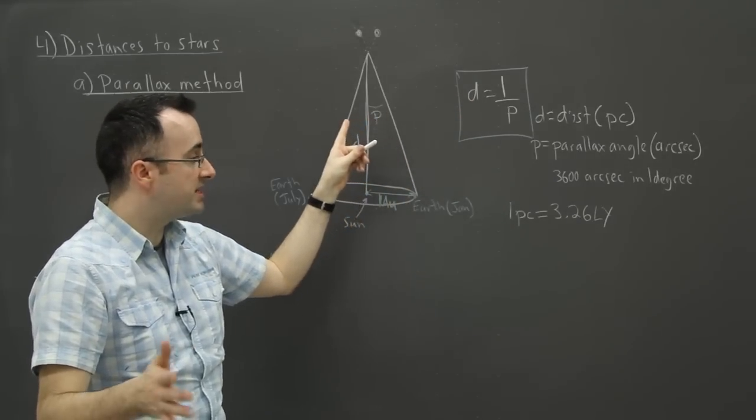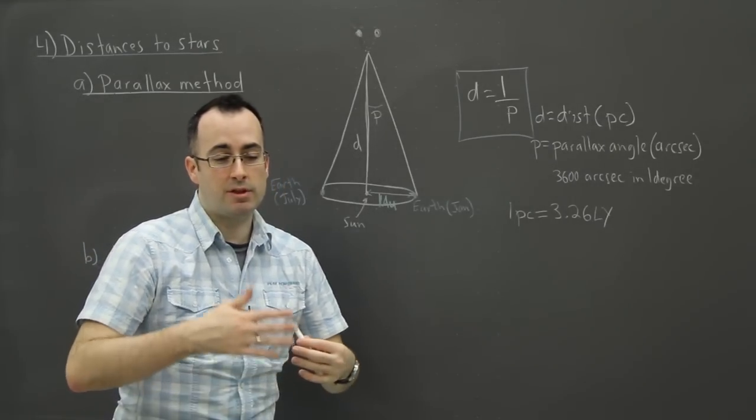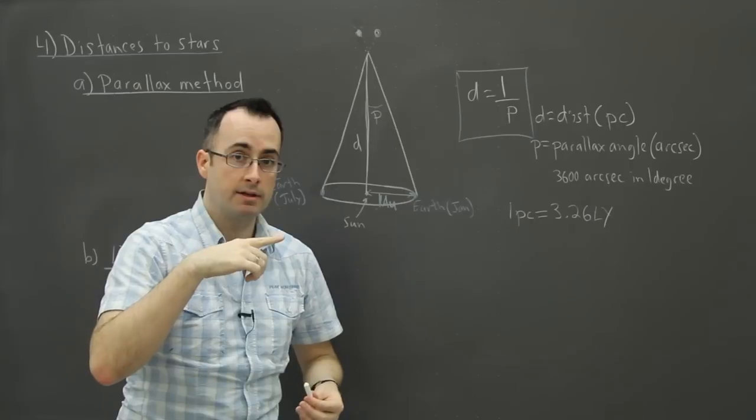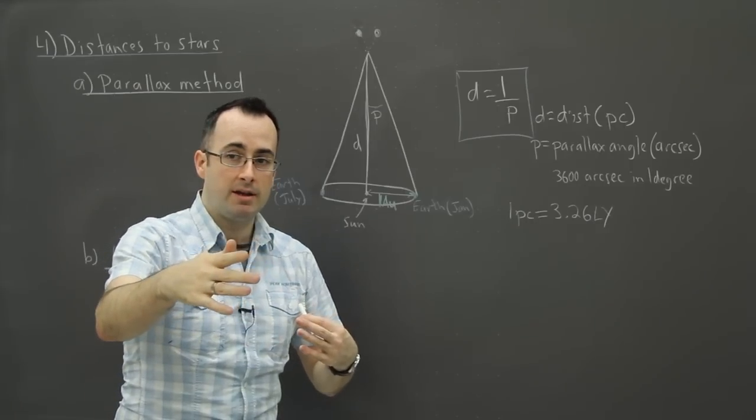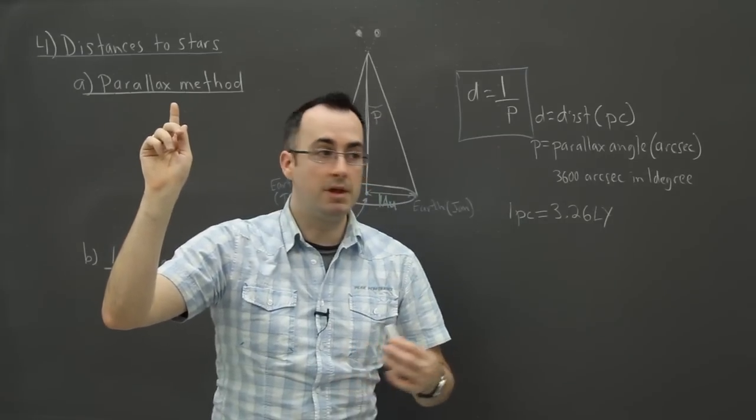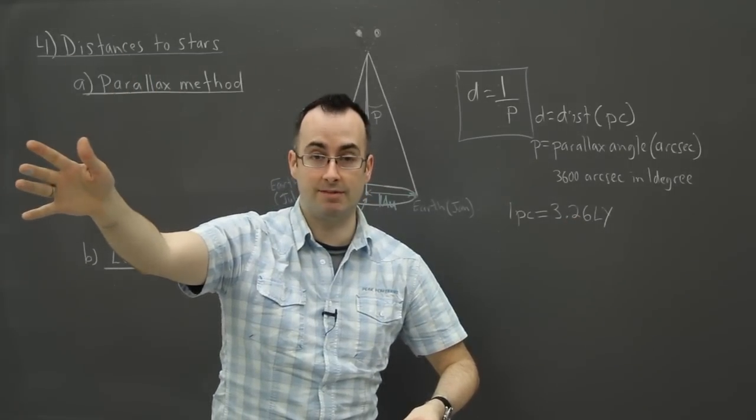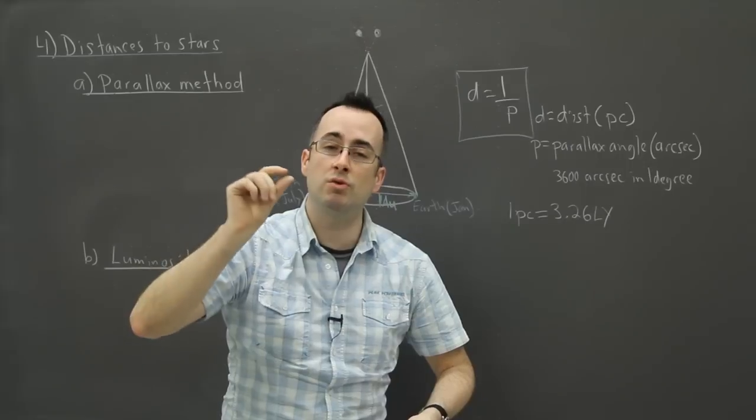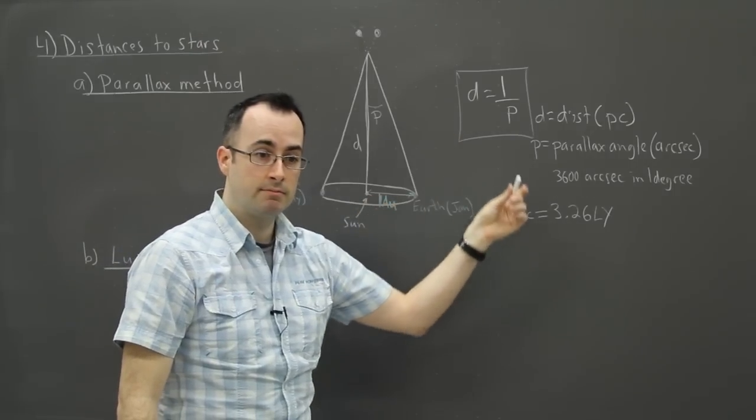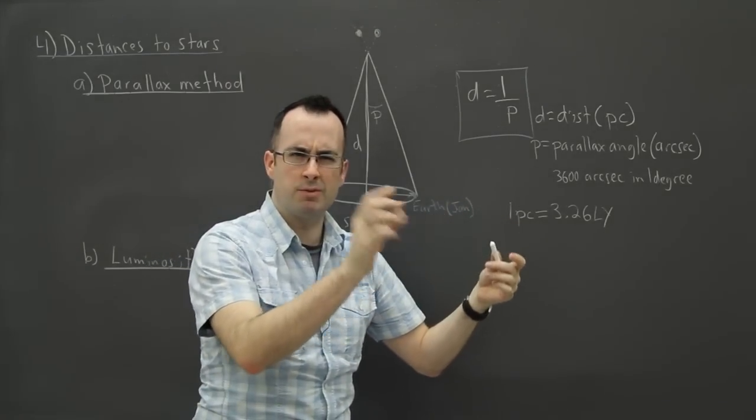This is good for distances of a few hundred parsecs. Anything further than that, we actually can't detect it moving. Technically every star should do this. The problem is they're so far away—imagine trying to do the thumb trick with something millions, billions, and trillions of meters away. You won't see anything really changing, even though it does. It's just that it's so small you can't detect it. That's why this method works well for close things, within a few hundred parsecs. After that, it sort of falls apart because we don't have good enough accuracy to measure those small angles.